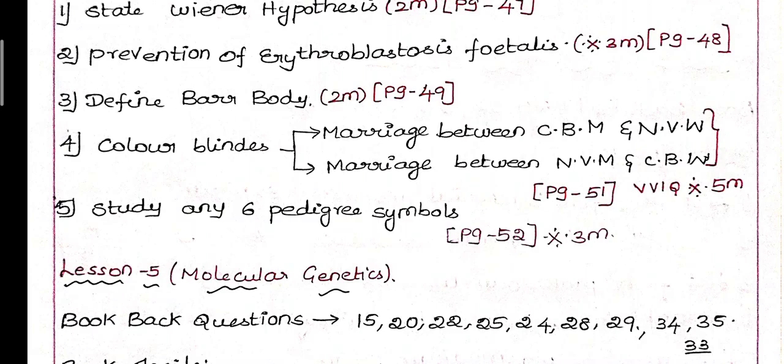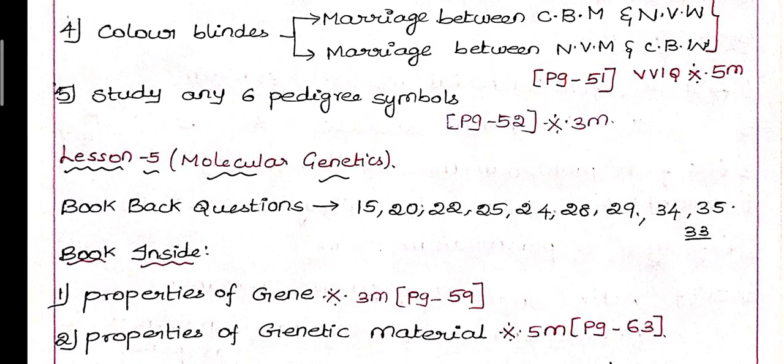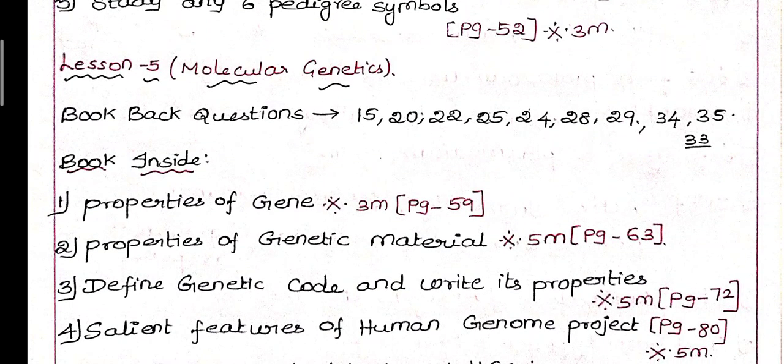Fifth question: Study any 6 pedigree symbols. In pedigree analysis, write 6 symbols for a 3-mark question. This is on page 52. Next is Lesson 5: Molecular Genetics. Book back questions to cover are: